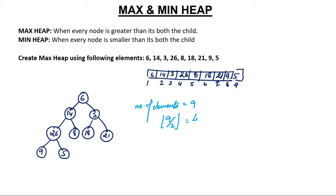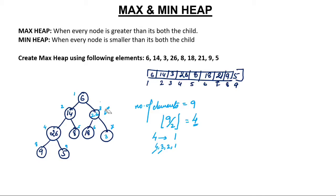Number of elements is 9, so we start from floor of 9 divided by 2, which is 4. We start from index 4 and go back to 1 — so we process indices 4, 3, 2, then 1. At index 4, among the node and both children, the current node is already maximum, so no interchange is needed. We move to index 3: the maximum among those three is 21, so we interchange — 26 comes up and 3 comes down.